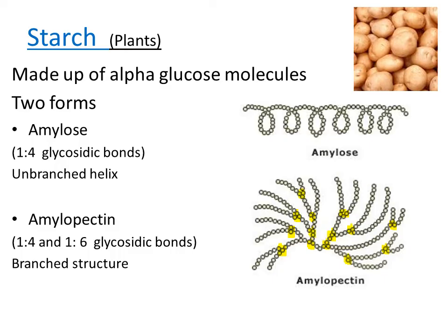Amylopectin is another form of starch, and this has one-to-four bonds and also one-to-six glycosidic bonds, which creates branches. You can see where highlighted in yellow that this is where the branches occur and where you would get the one-to-six bonds. In both instances, the orientation of the bonds means the molecule actually spirals, creating a highly coiled and compact molecule which is very good for storage.